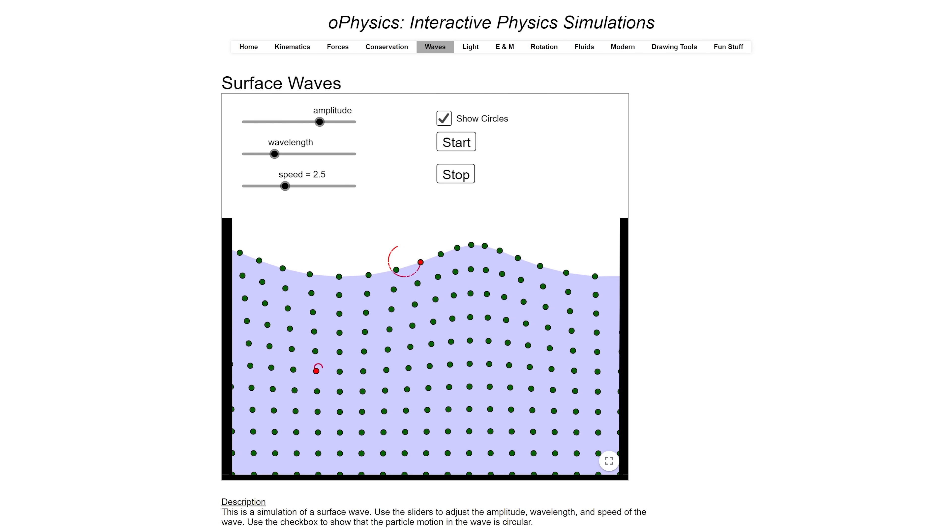what you get is actually a circular path. The deeper you go, the smaller the circles get.